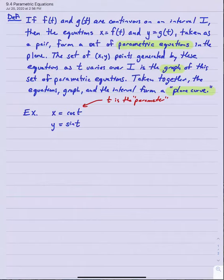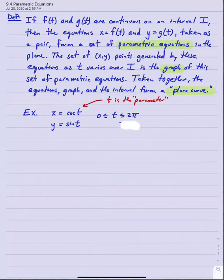I also need an interval. Next to the equations, I have to specify some t interval on which these two functions are defined. For this example, let's say t is on the interval 0 to 2π. So I could write it that way, or say t is in the interval 0 to 2π using interval notation. We've got our pair of equations, my parameter is t, and I've defined an interval for that parameter.